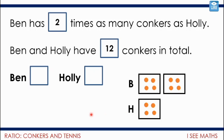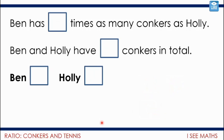If Ben and Holly have twelve conkers in total, then Ben must have eight and Holly must have four — because Ben has twice as many lots as Holly. So in total we're splitting into three parts, giving Ben two of those parts. Ben has eight, Holly has four. Pause the video and see if you can come up with a couple of different answers — maybe change the number in here or the quantities.